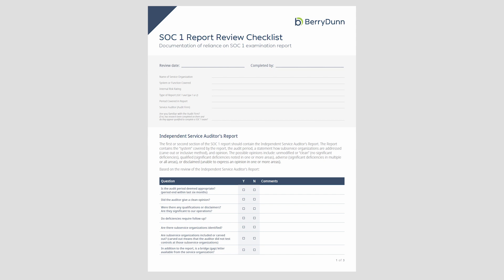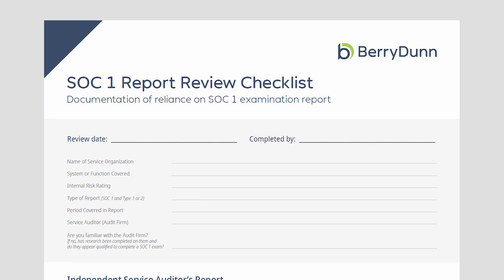To walk through the very beginning of this document, it's just background information that you can pull from the title page, and it's also specific for your organization — when was the review date, who completed the document. This is important because, as auditors, we will ask for this information to evidence that you are doing vendor management activities. Documenting this in the checklist helps demonstrate that you are doing ongoing vendor management.